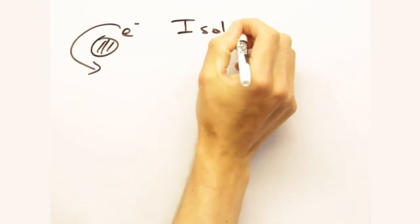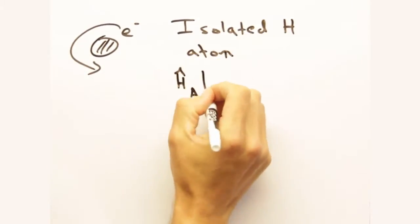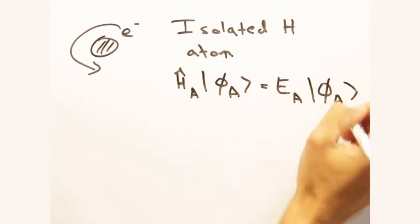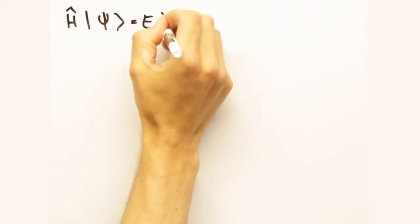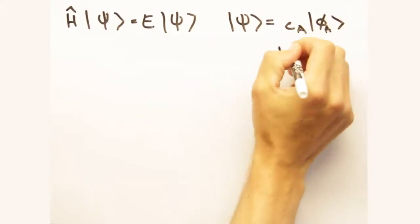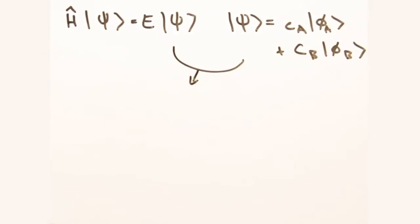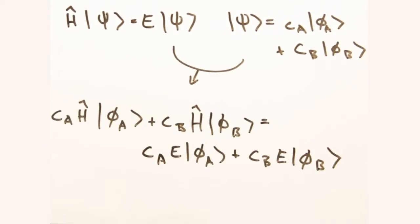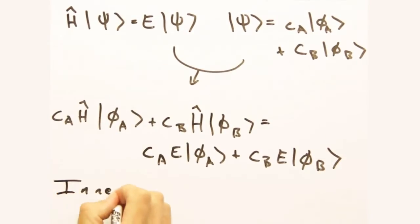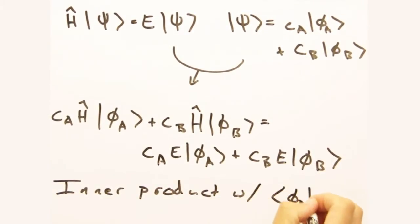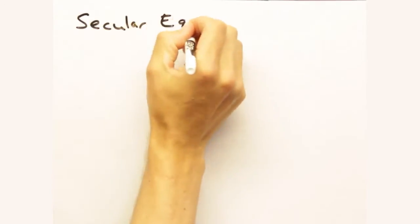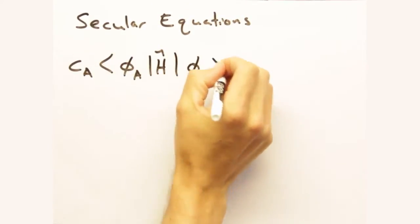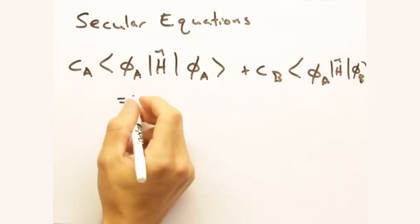And the states phi_A and phi_B represent the states of the isolated hydrogen atoms that we're bringing closer together? Right. Taking this now and shoving it through our Schrodinger's equation yields this somewhat complicated equation, and from this we can develop two secular equations by taking the inner product once with phi_A and once with phi_B. These two equations are nice in the sense that now everything is either an integral or a constant.